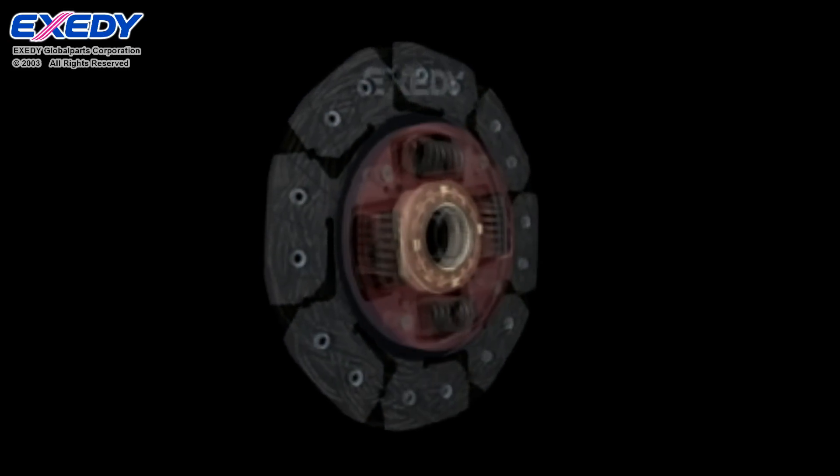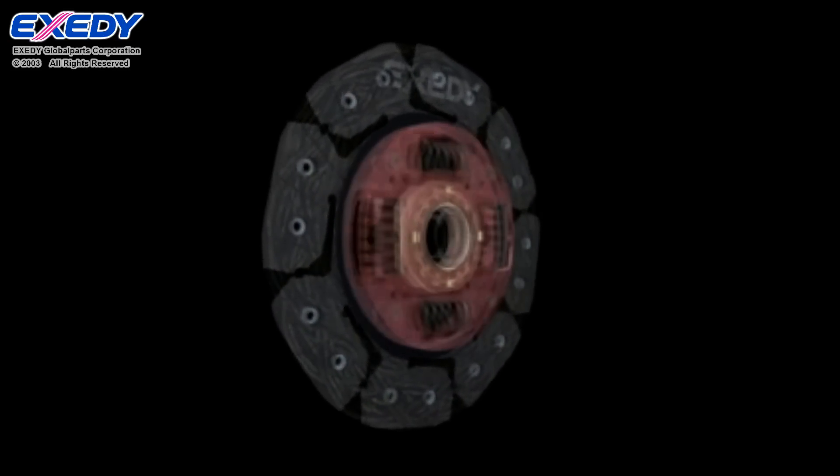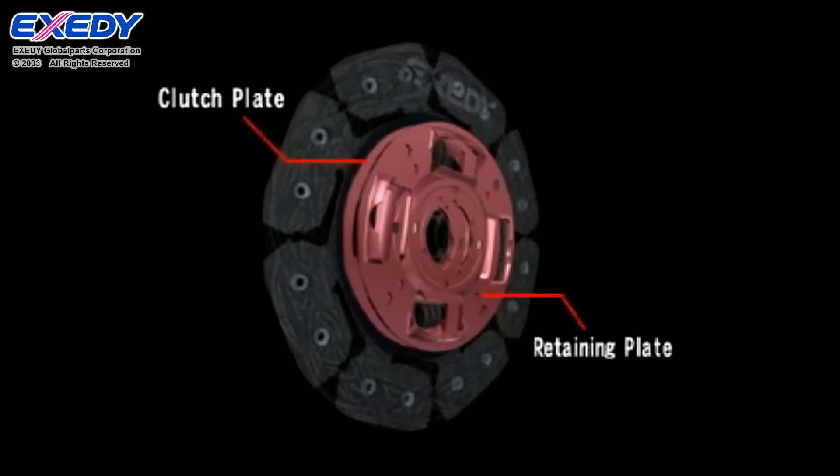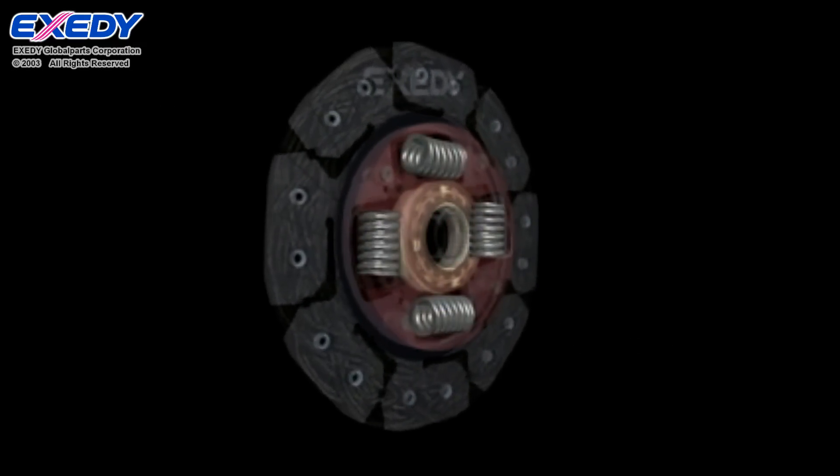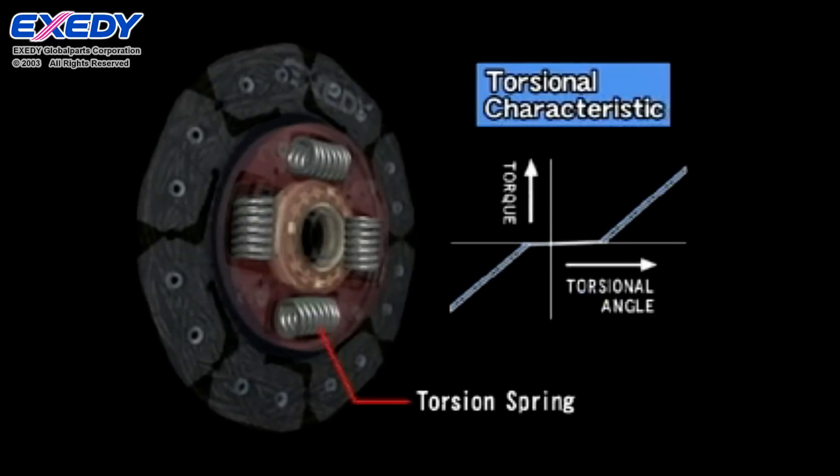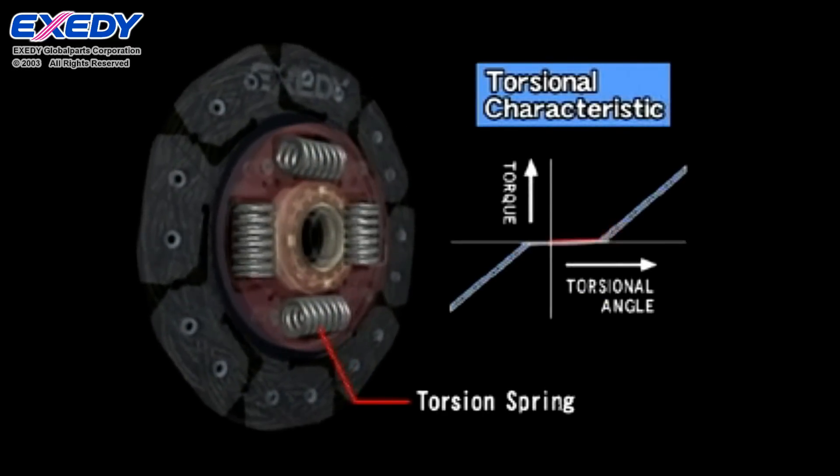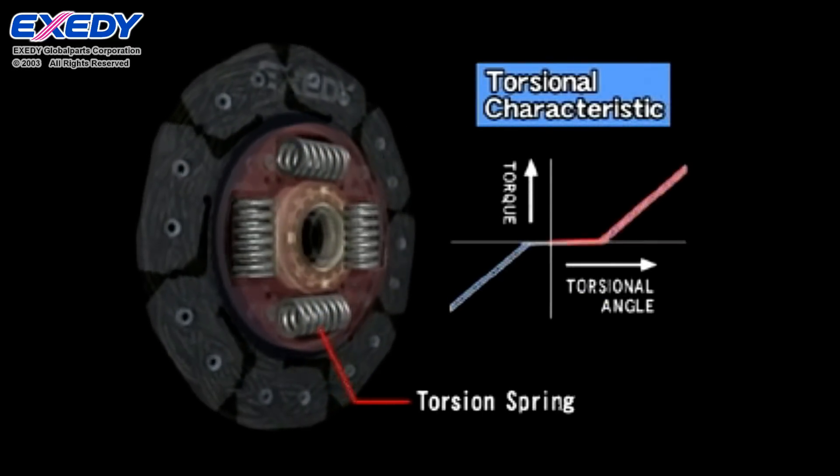Engine torque is transmitted to the retaining plate and clutch plate, which hold the entire assembly together while actuating the torsion springs. The primary function of the torsion springs is to absorb fluctuations in engine revolution.